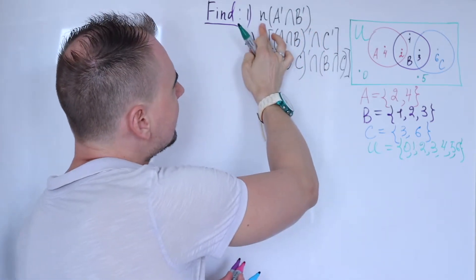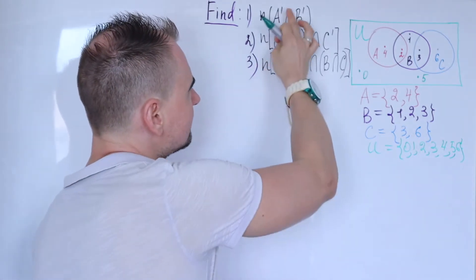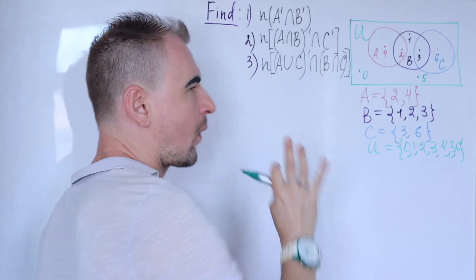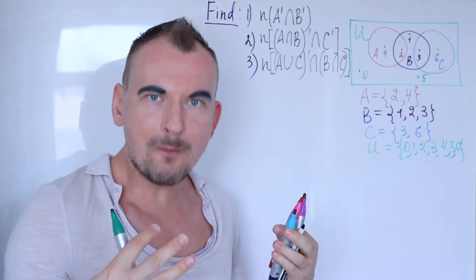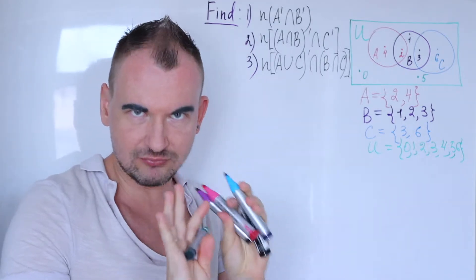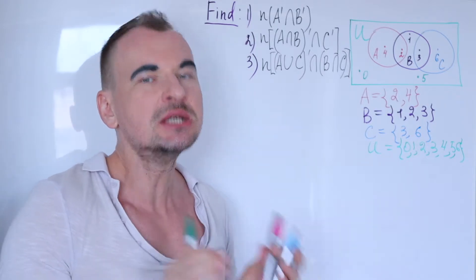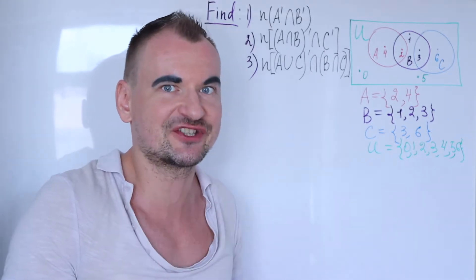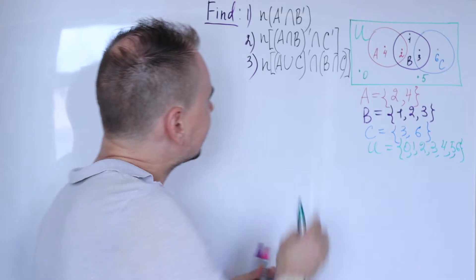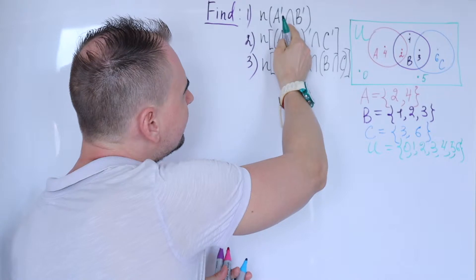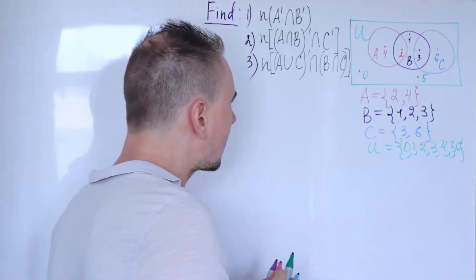For question one, we need to find the number of elements in A prime intersection B prime — that is, the complement of A intersected with the complement of B. If you need help with intersection, union, or complement of a set, you can check out the playlist on sets with separate videos on each operation.